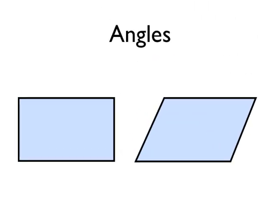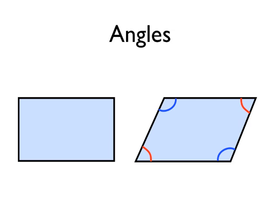What's the difference between a rectangle and a parallelogram? We can describe the difference using the angles in the shape. All four interior angles in a rectangle are right angles — they're all the same size. Whereas in a parallelogram, there are two pairs of angles that are the same. The angles opposite each other are the same size. The two blue angles are the same size, and the two red angles are the same size, but the blue and red angles are different from each other.